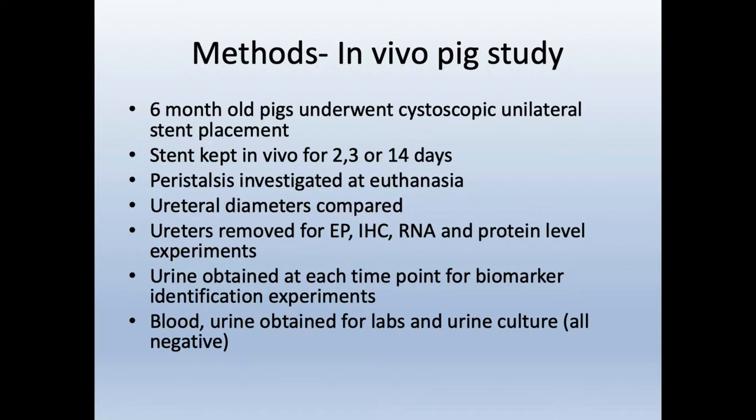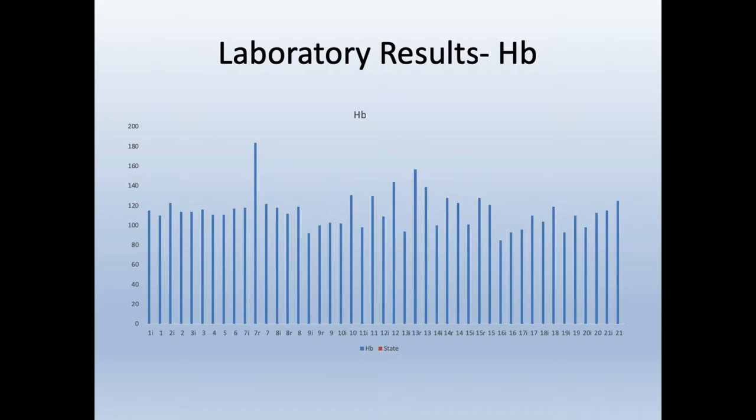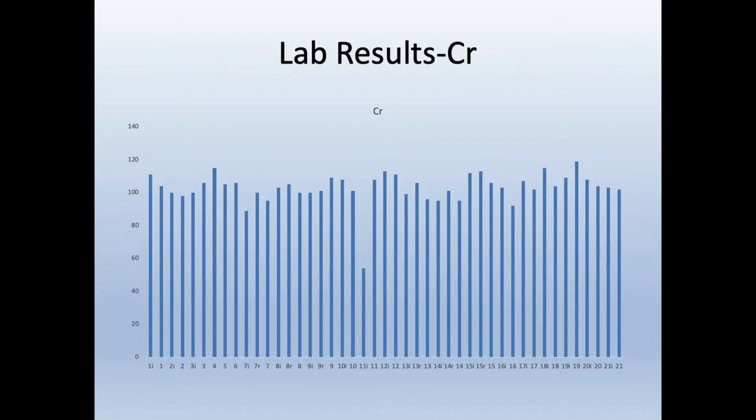Peristalsis was investigated at euthanasia, and I'll show a video of that. We looked at ureteral diameters, then removed ureters for various studies. We obtained urine at every time point for biomarker identification experiments, as well as blood and urine at each time point. All cultures at every time point were negative. Hemoglobins tended to be within the normal range, and the same was the case for creatinines even with stent placement — which reflects what we see clinically, where stenting doesn't tend to change creatinine much unless the patient has preoperative CKD.